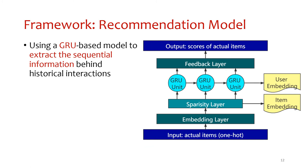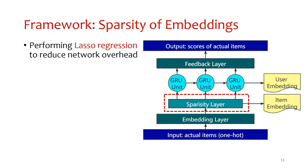The output of the GRU layers represents the user's current items of interest, namely the user embedding. Finally, the user embedding is passed into one or several feed-forward layers to output the scores of items that the user is likely to click next. To reduce network overhead between the cloud and the devices, we perform lasso regression to sparsify item embeddings of the item candidate set. Lasso regression extracts the principal information from neural embeddings through sparse encoding.